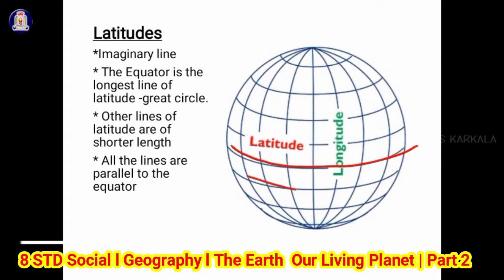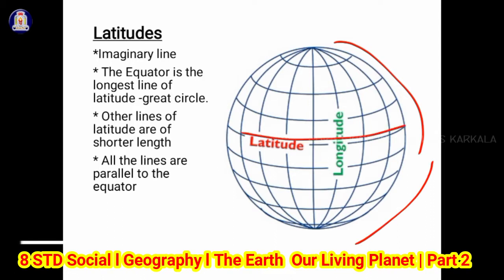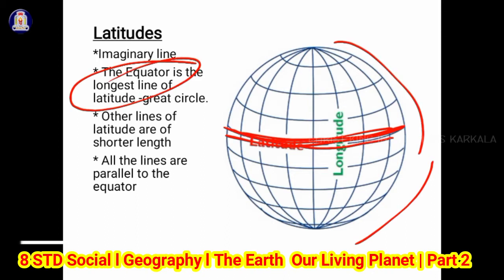You can see these horizontal lines — these are called latitudes. Latitude is an imaginary line which joins all the places that have the same angular distance north or south from the equator. This is the equator. The equator is the longest line of latitude, which is called the great circle. Why is it the longest? Because from the pole the earth bulges, that is why the equator is the longest line of latitude.